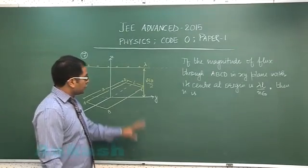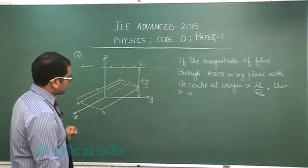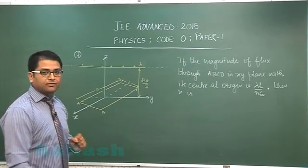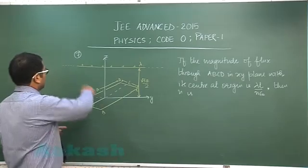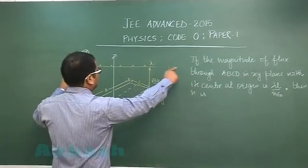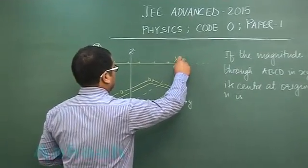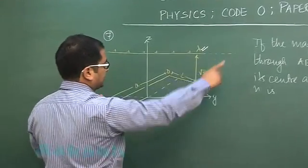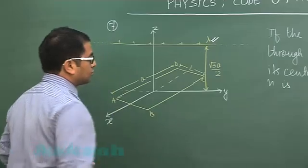Question number 7 is a very beautiful question from electrostatics pertaining to electric flux. An infinitely long line charge of density lambda is parallel to the y-axis at a distance z equals root 3a by 2.